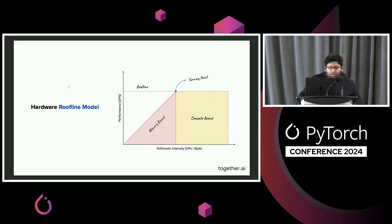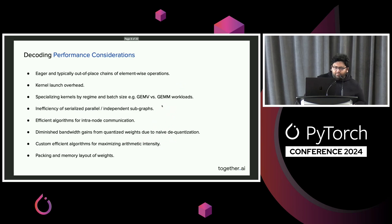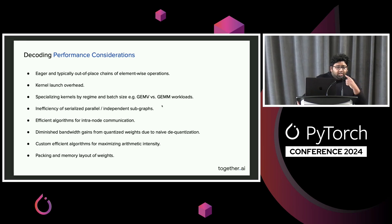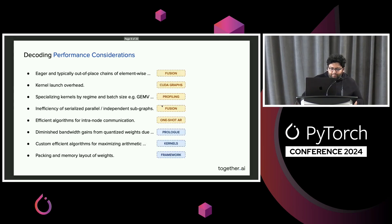This leads to the roofline model. If you're going to push performance, you're going to try to move up this line and push out the boundaries of arithmetic intensity. When you think about decoding, a lot of solutions have become staple in open-source frameworks like vLLM, TGI, and SGLang, tackling these problems in many different ways. Some of the easier ones: kernel launch overhead can be solved with CUDA graphs; chains of elementwise operations with memory reads and writes can be solved with fusion. There are many different problems with decode, and this is a subsample — all known solutions that can be solved and tackled.